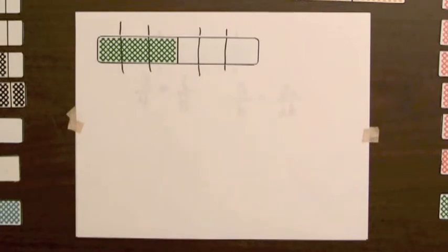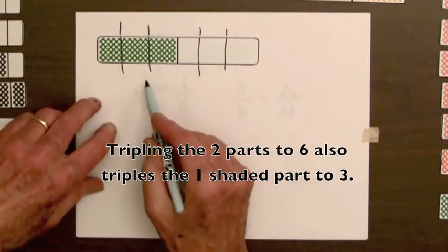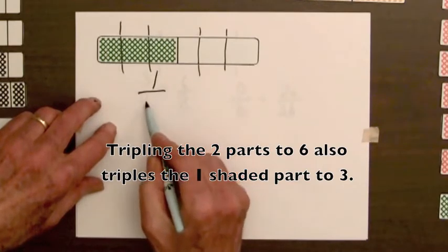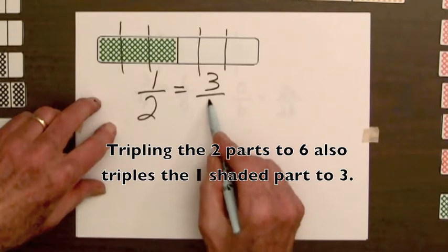We've also increased the number of shaded parts. The total amount of shading hasn't changed, so the original fraction one-half is equal to three-sixths.